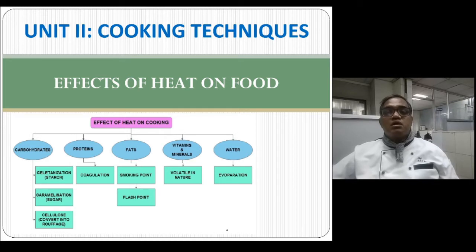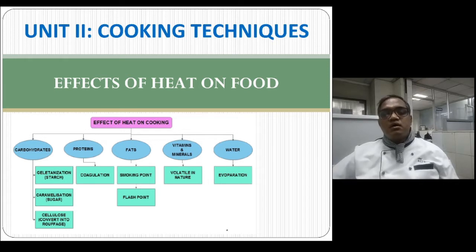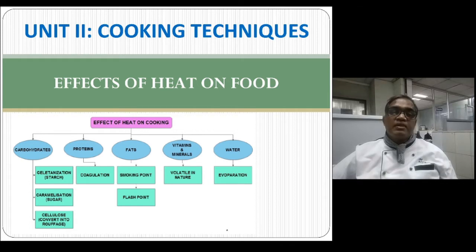Today we are talking about the effects of heat on food. We take food because of its nutrients — carbohydrates, proteins, fats, and so on. We will discuss what happens to these nutrients when food is heated. We have a flowchart here; we will go through each and every nutrient one by one.